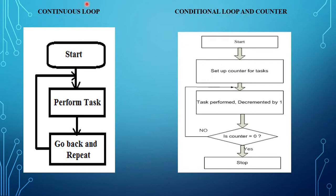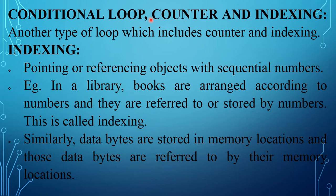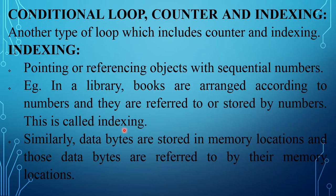Another type of loop includes counter and indexing. Indexing means pointing or referencing objects with sequential numbers. For example, in a library, books are arranged and referred to by numbers. Similarly, data bytes are stored in memory locations and those data bytes are referred to by their memory locations — this is called indexing.